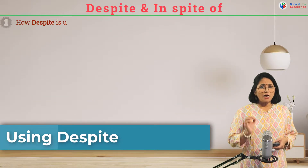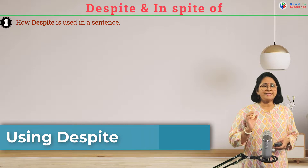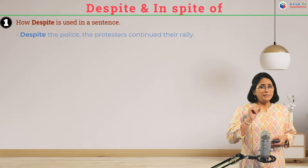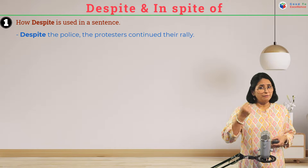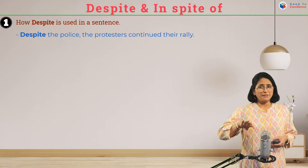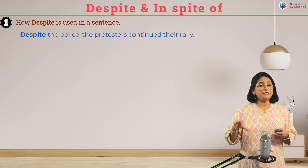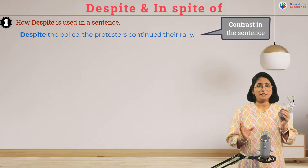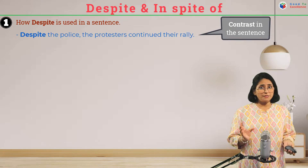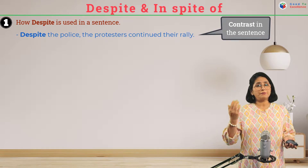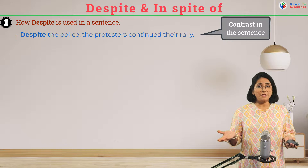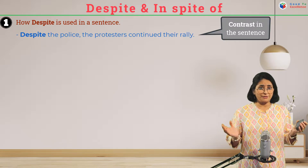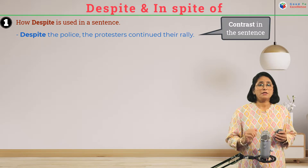First, let's check how 'despite' is used in sentences. 'Despite the police, the protesters continued their rally.' See the contrast here — the police was there, but the protesters weren't scared. That's the contrast.